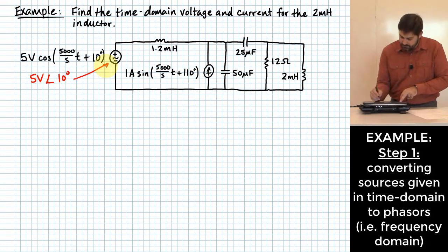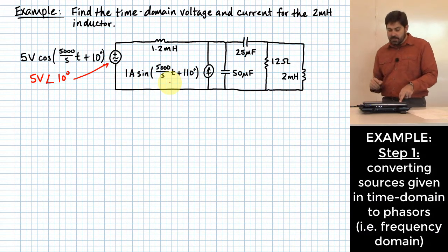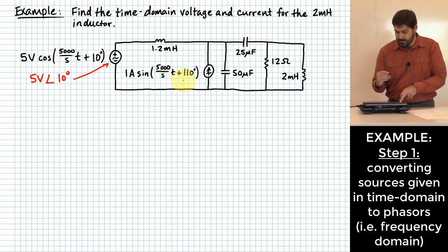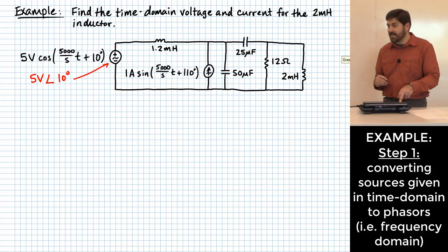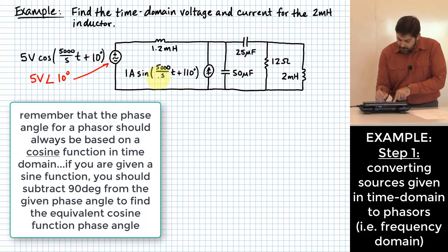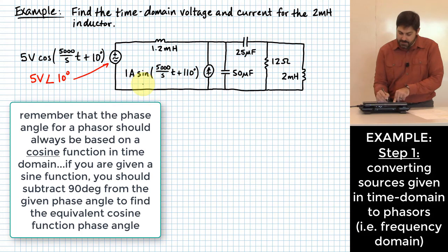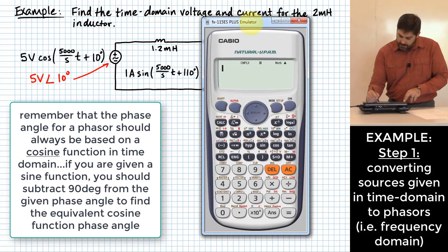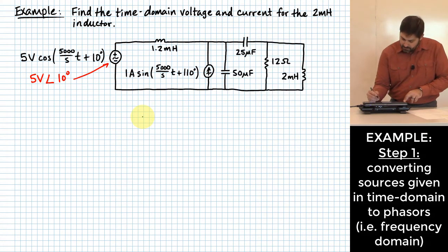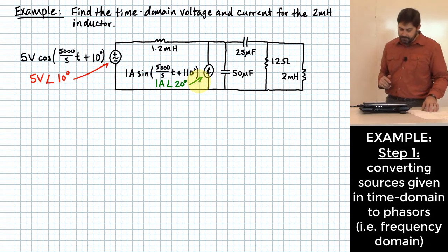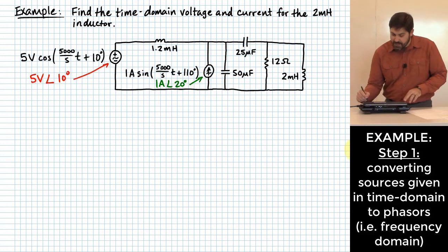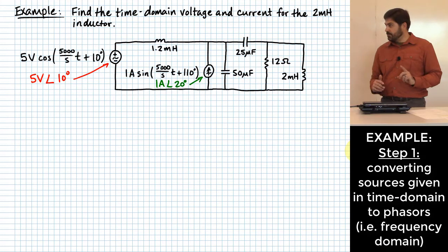Now what about this other source? I've got 1 amp times the sine of 500 per second t plus 110 degrees. Can I just do 1 amp angle 110 or not? I don't think it's a wise idea to do it that way. This is a sine function, so we want to make sure we are converting this properly. You basically subtract 90 degrees from the angle that you have if it's given with sine. So this is just 1 amp angle 20 degrees. That's that source expressed as a phasor. Actually we are done with step one.